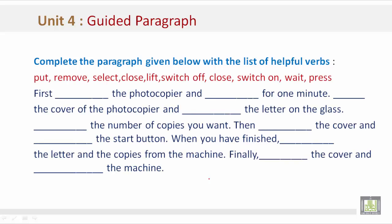Complete the paragraph given below with a list of helpful verbs: put, remove, select, close, lift, switch off, close, switch on, wait and press. Let's take a look. First switch on the photocopier and wait for one minute. Lift the cover of the photocopier and put the letter on the glass. Select the number of copies you want. Then close the cover and press the start button. When you have finished, remove the letter and the copies from the machine. Finally, close the cover and switch off the machine.